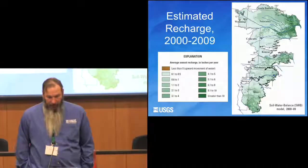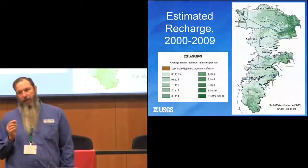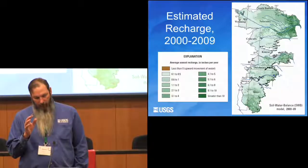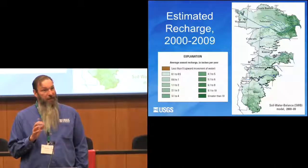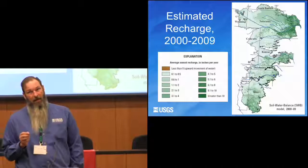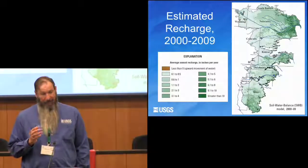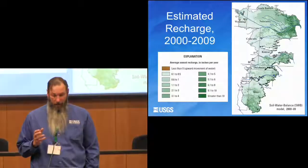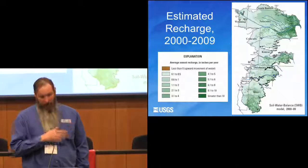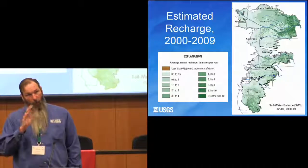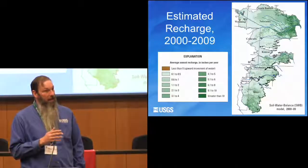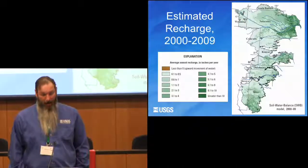Here is one example of recharge estimated at the scale of the aquifer. For the 2000s, patterns of recharge were estimated with a daily soil water balance model. The darker green colors show higher rates of recharge — 8 or 10 inches per year — and the lighter colors go down to zero or a tenth of an inch per year, which is more prevalent in the western and parts of the southern high plains.